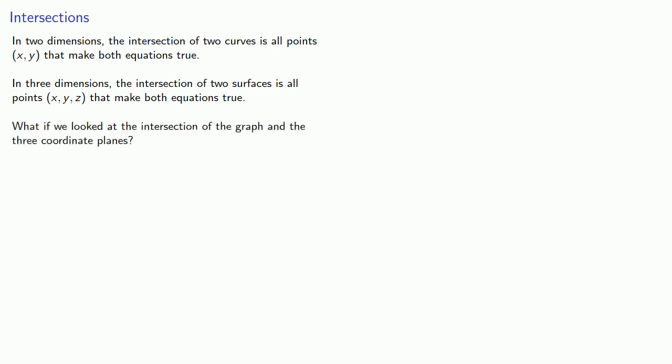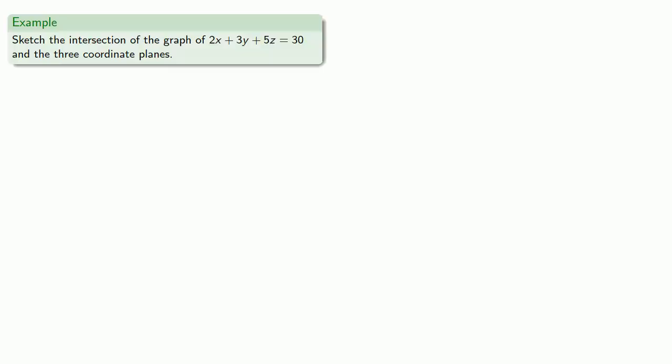So what if we looked at the intersection of the graph and the three coordinate planes? For example, let's sketch the intersection of the graph of 2x plus 3y plus 5z equals 30 and the three coordinate planes.